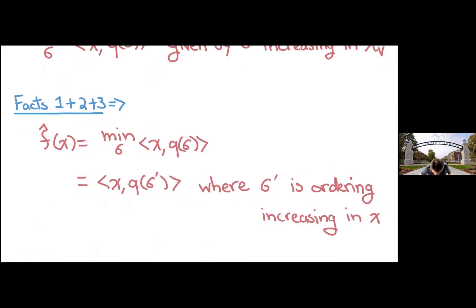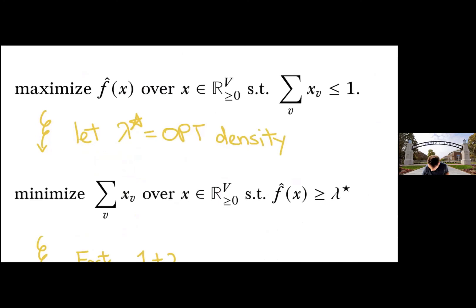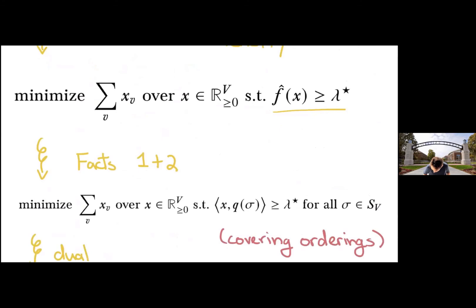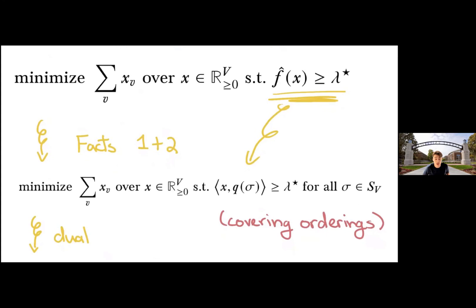So what that lets us do then is as follows. I want to maximize the Lovász extension. And I'm going to let lambda star denote the optimum density from now on. And I can flip it and make this minimizing the sum of x's subject to trying to make sure that Lovász extension is at least the optimum density. Let's say we've guessed it for the time being. And taking some of these known facts, it lets us then say that let's just take this and expand it out to a bunch of linear constraints. So I want to make sure that for any ordering, x times that vector induced by the ordering is at least lambda star.